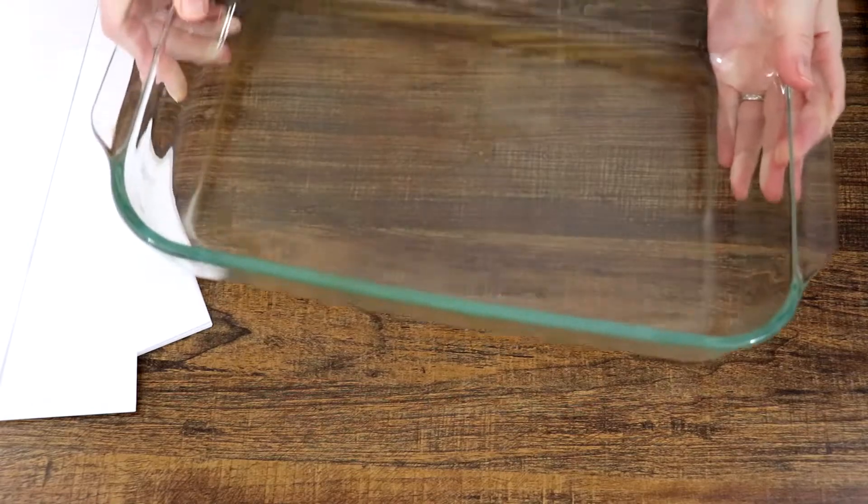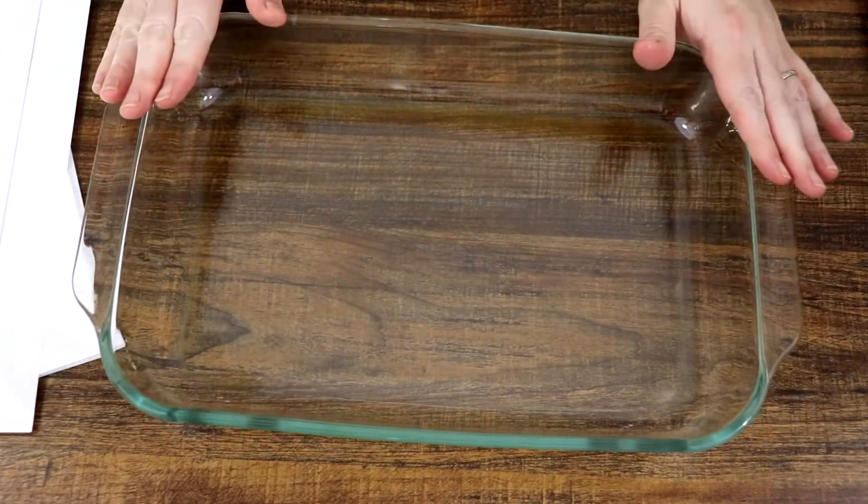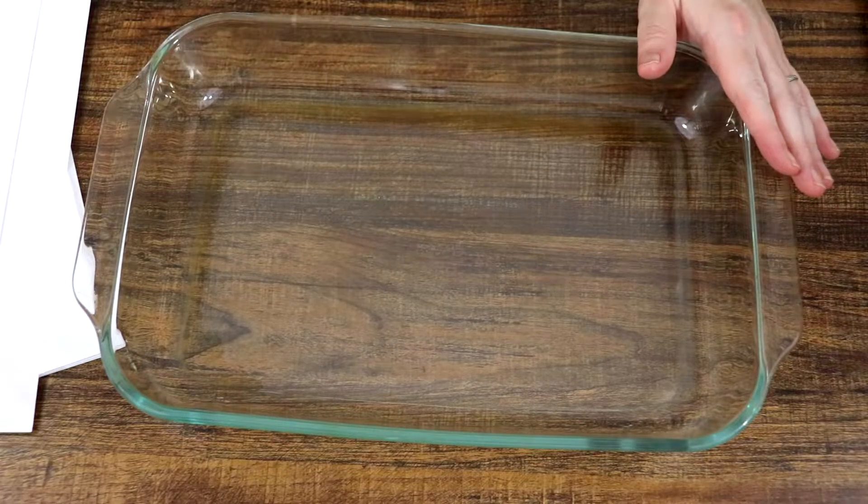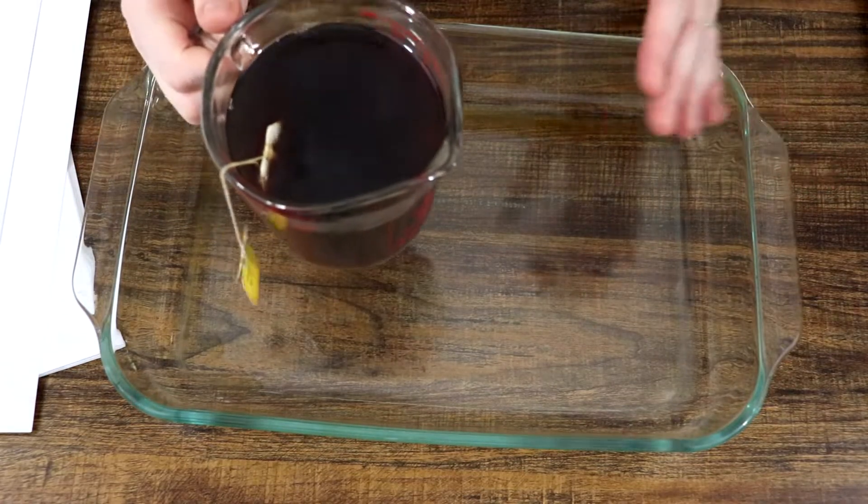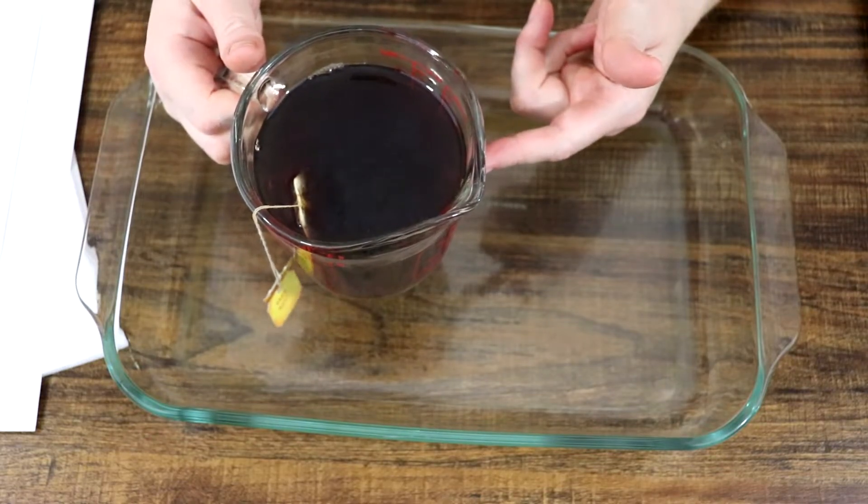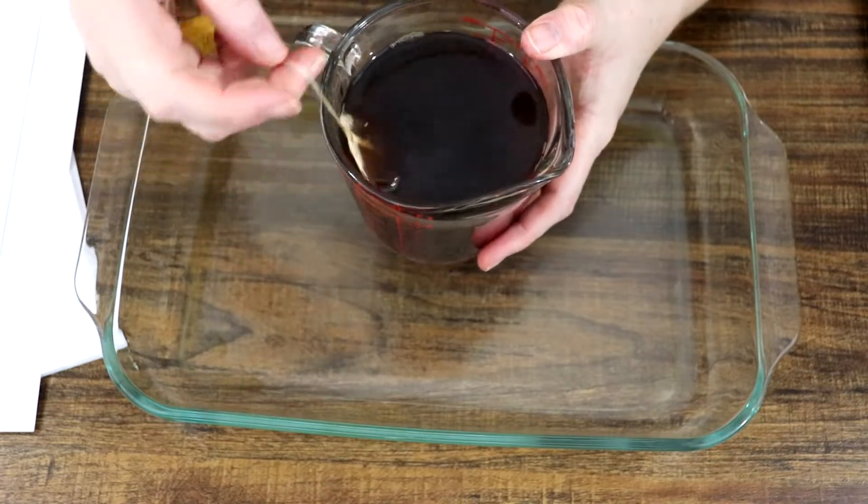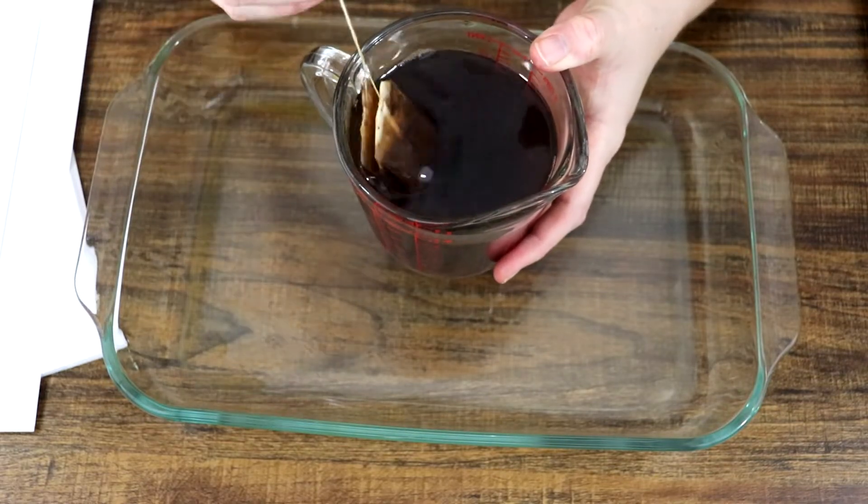So what you're going to do, first you're going to take your baking dish and you're going to make about two cups of black tea. Now this is two cups, two tea bags.